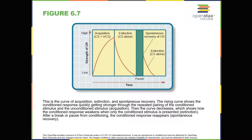Taste aversion is a type of conditioning in which an interval of several hours may pass between the conditioned stimulus — whatever was ingested — and the unconditioned stimulus — the nausea or illness. For example, between classes you and a friend grab chicken curry from a food cart. A few hours later, you feel nauseous. Although your friend is fine and you determine it was intestinal flu — not the food — you've developed a taste aversion. The next time someone orders curry at a restaurant, you immediately feel ill. You've been conditioned to be averse to a food after a single negative experience.